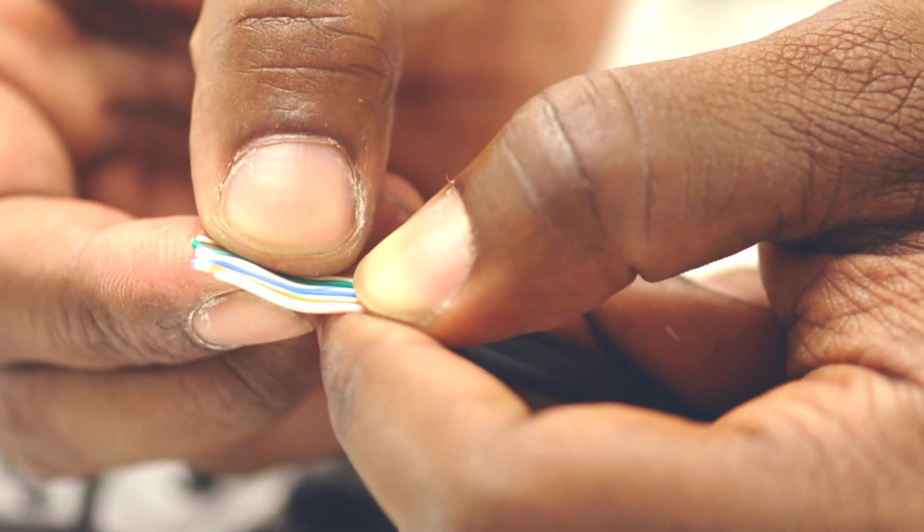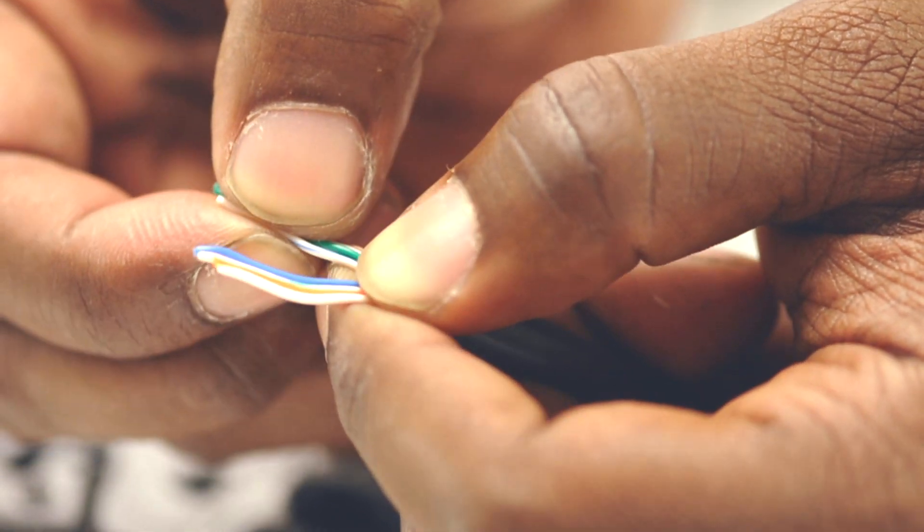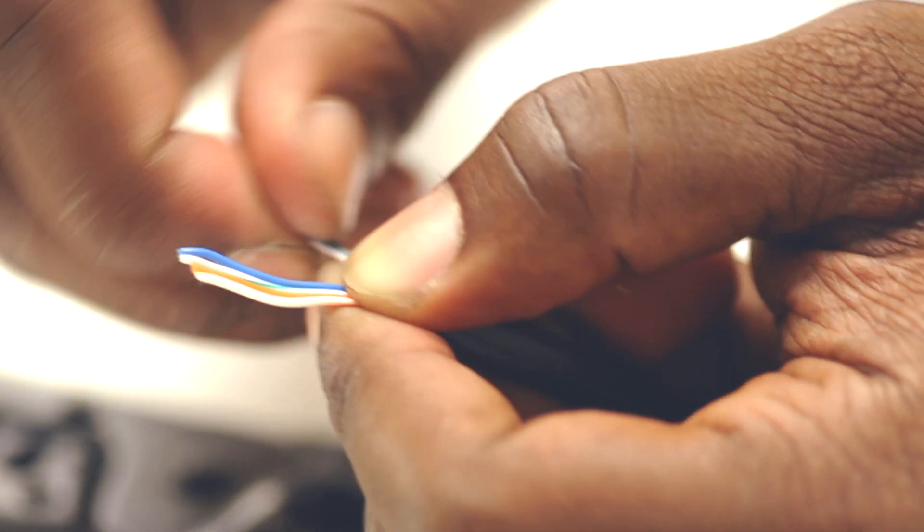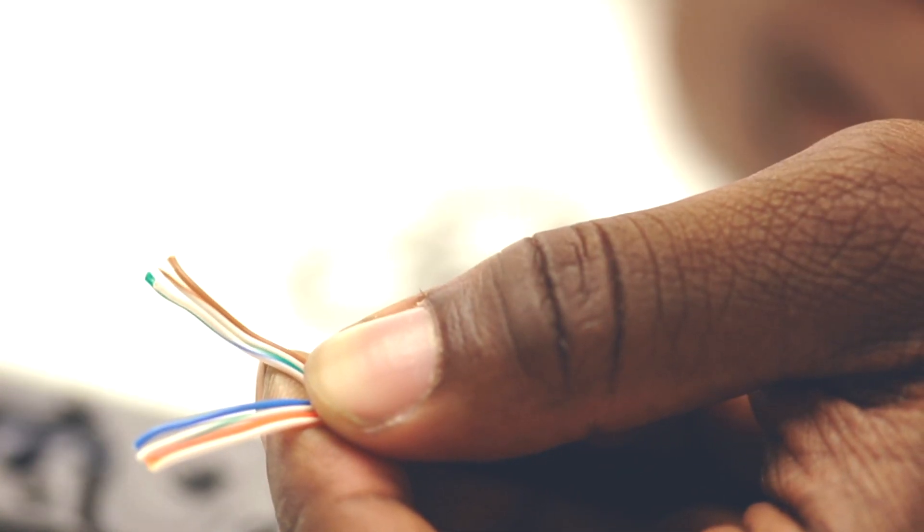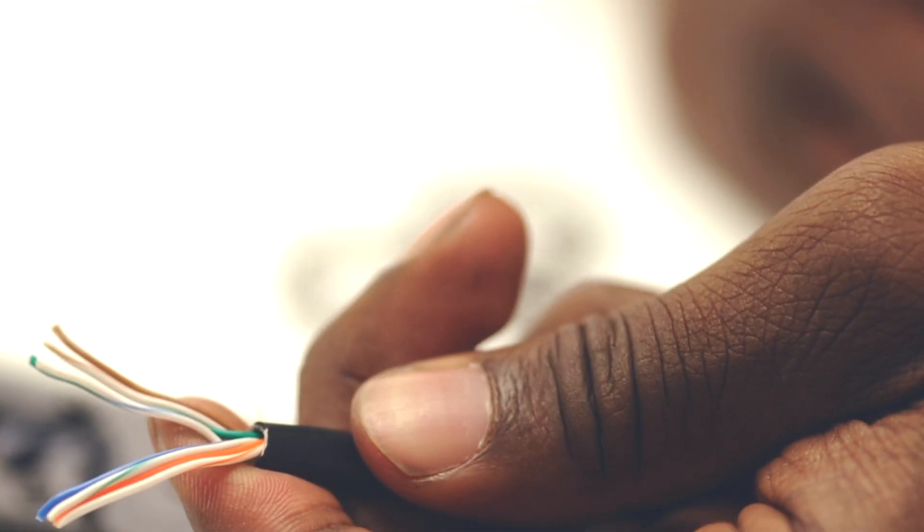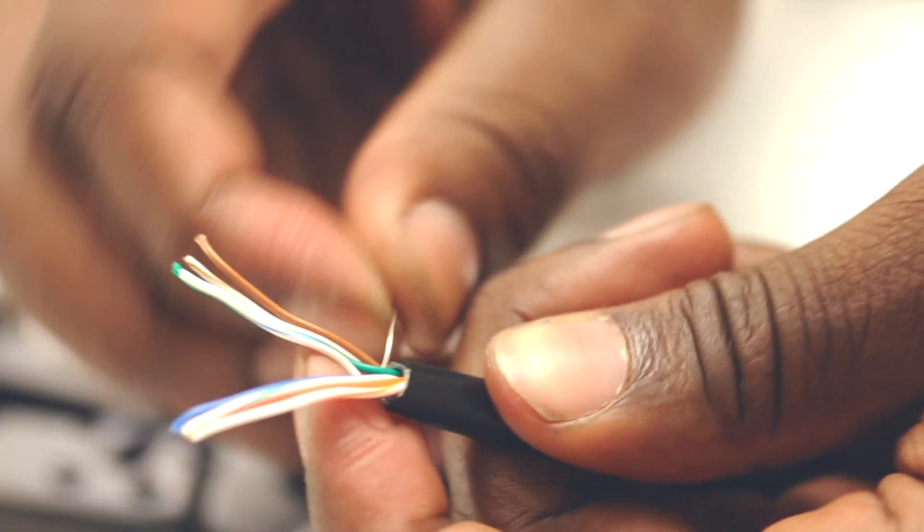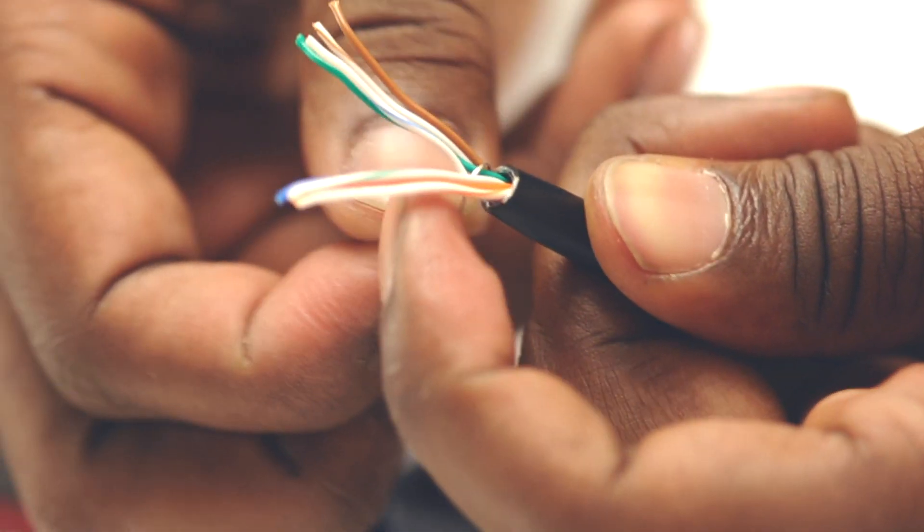Since this is a shielded connector we need the drain wire to come into contact with the connector. In this installation we are going to divide the pairs in half, wrap the drain wire around four of the wires and fold it over the back.